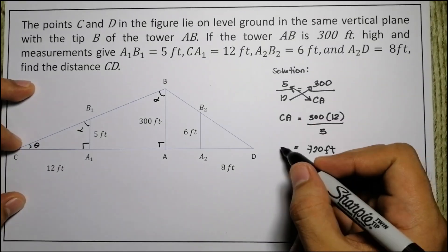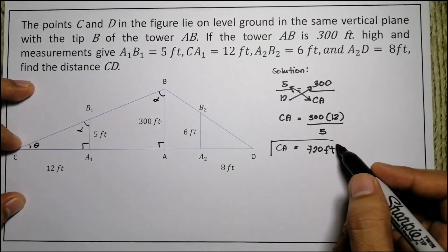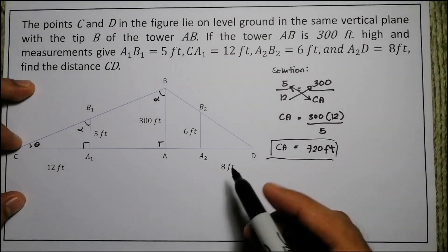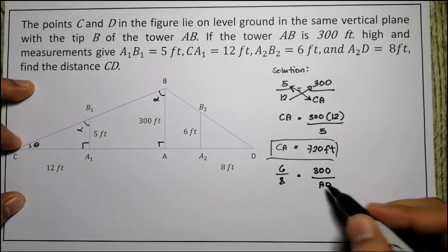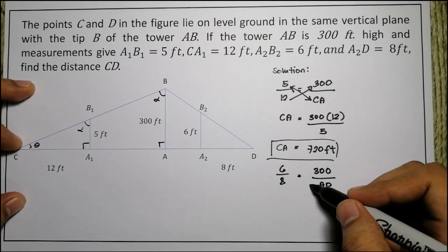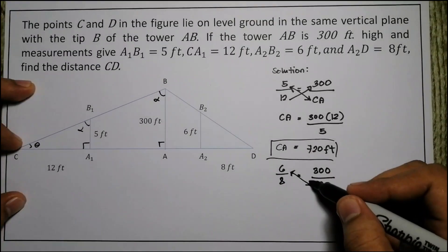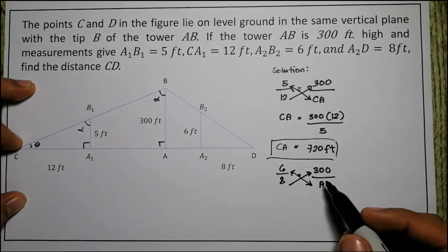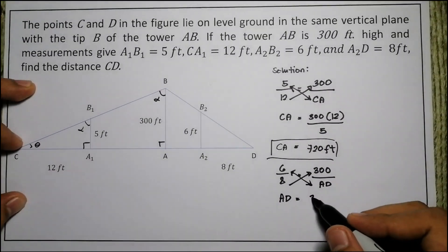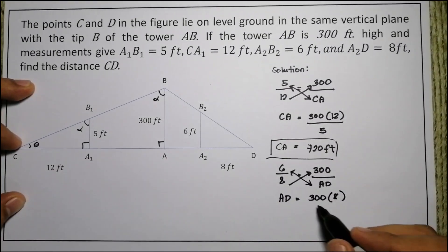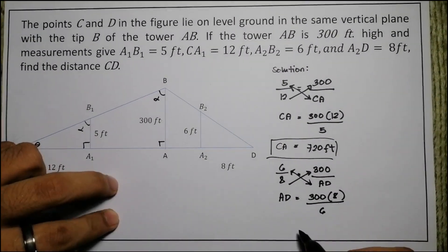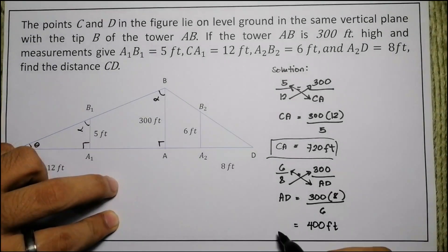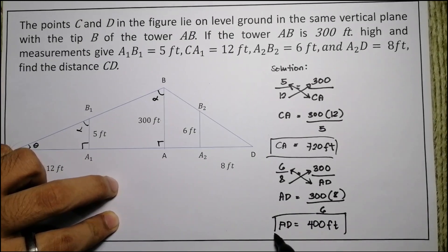So putting it into an equation, 6 over 8 feet is equal to 300 over AD. Now, we cross-multiply in the same manner. AD goes to the top, the 6 goes to the bottom. The 8 will be cross-multiplied to 300. So AD is equal to 300 times 8 divided by 6. If we compute that, 300 times 8 divided by 6 will give us an answer of 400 feet. So that's the value of our AD.